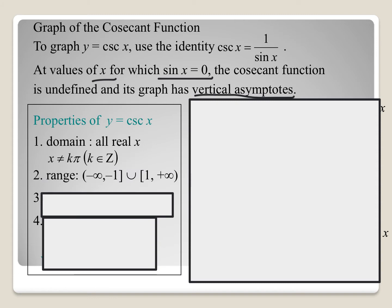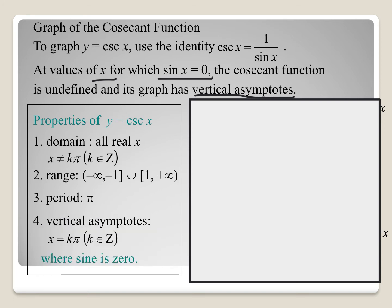For our range, it's going to be from negative infinity to negative 1, and then from 1 to infinity. Our period is pi, so the length of the cosecant cycle is pi. For our vertical asymptotes, it's going to be x equals k times pi, because that's where we would get a 0 in our denominator.